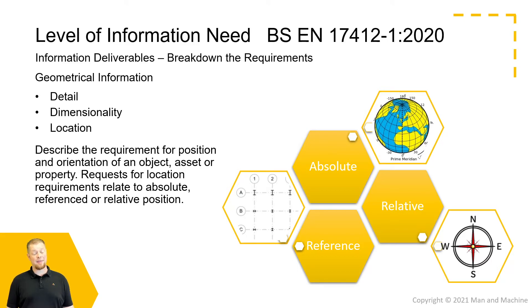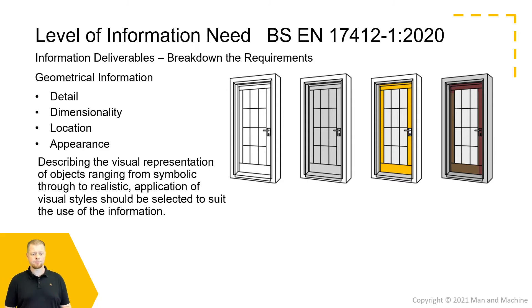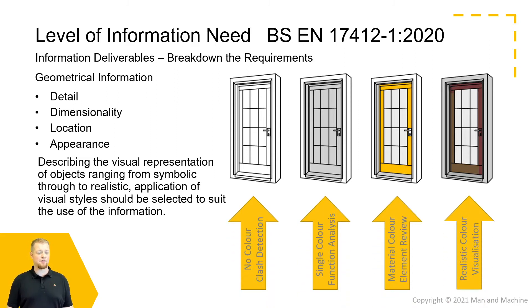We also need to consider where objects are in real-world space. There are three core ways of describing this: absolute location — where it physically exists in real-world space in relation to something like GPS; relative space — in relation to something else, potentially including its orientation; and reference information — if we are using grids or reference planes within a project, referencing the location of an object to another location, which might include levels. We could also consider the appearance of an object — everything from use for clash detection, where actual appearance isn't necessarily important, all the way through to elemental review looking at materials, and visualisation purposes for client engagement.